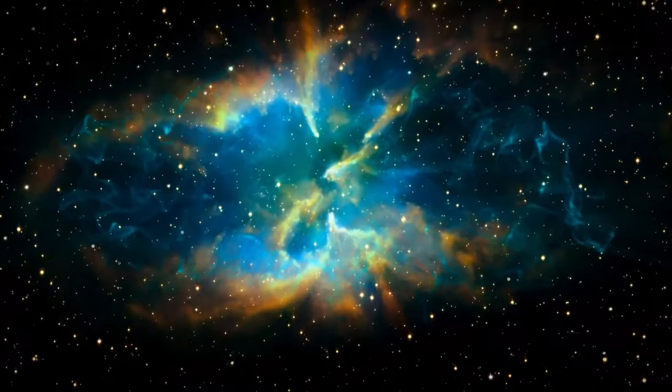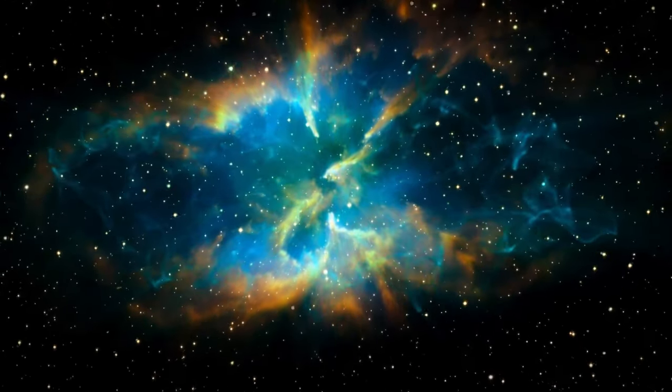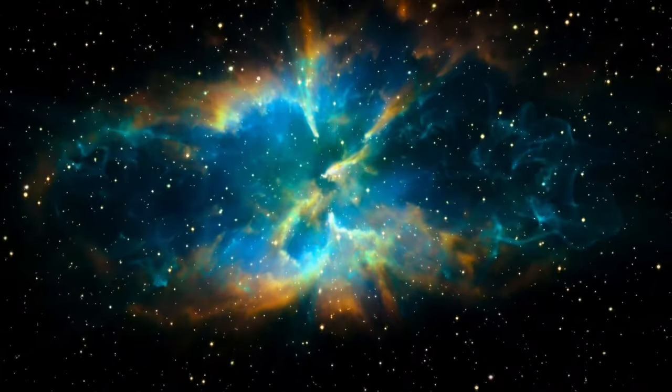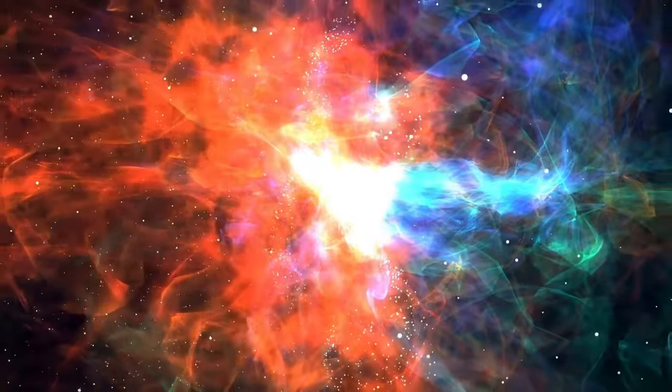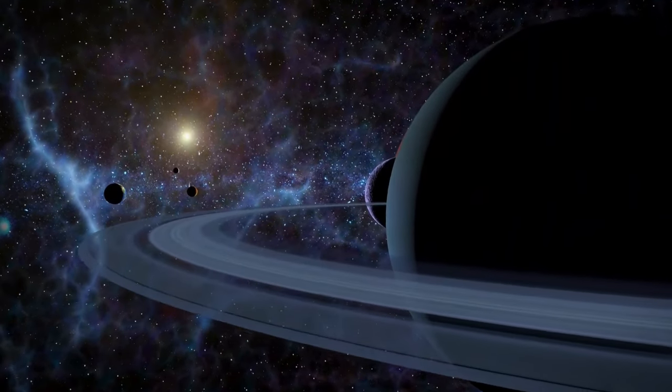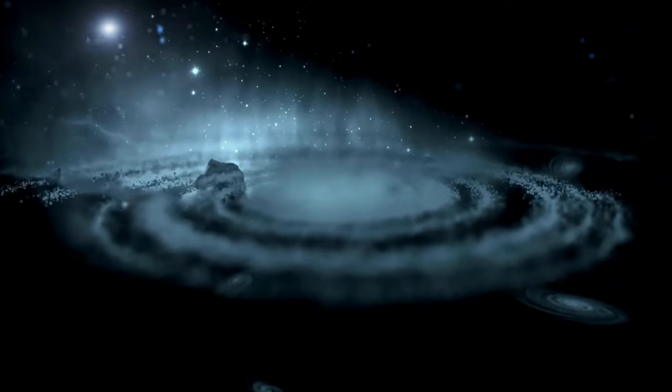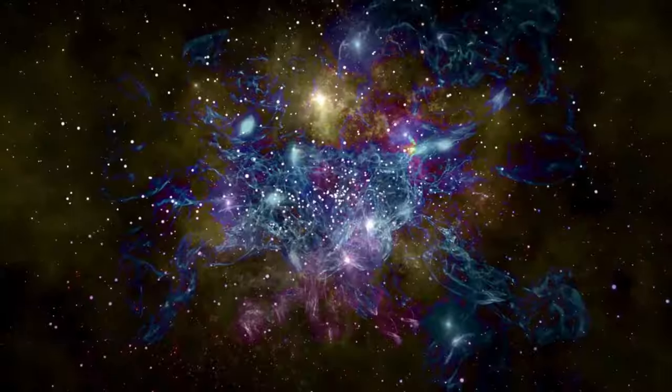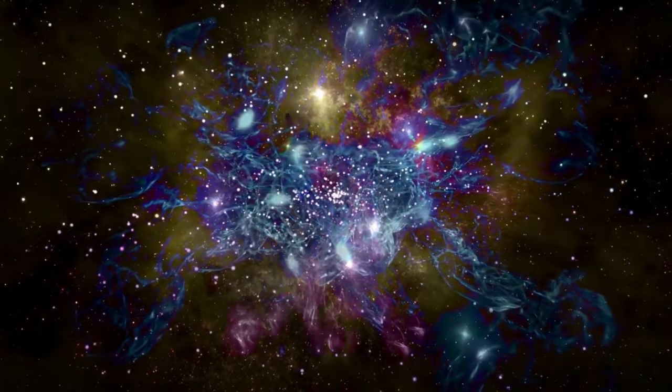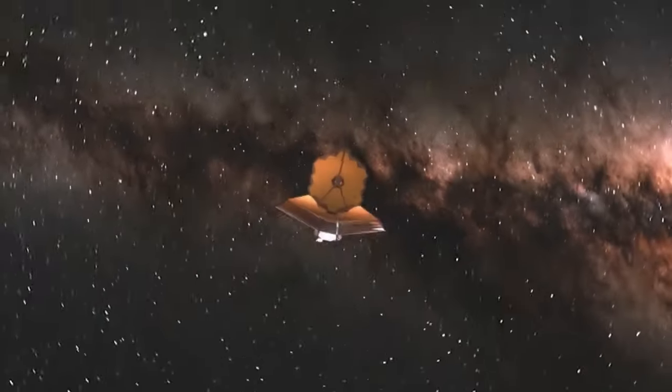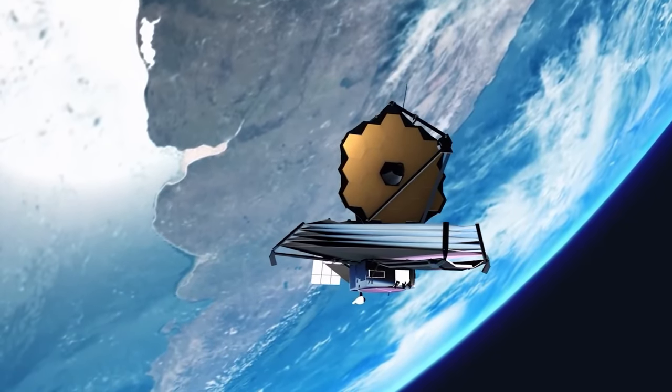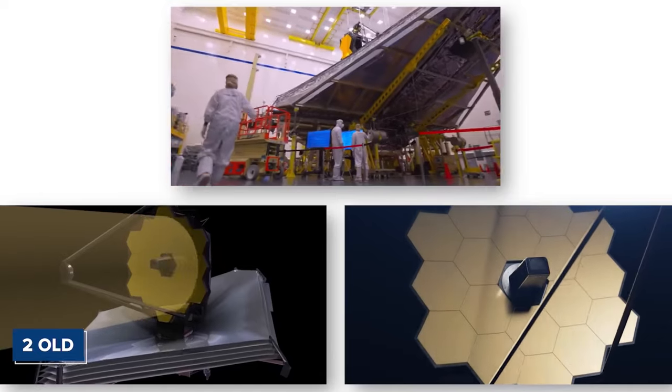At the heart of the James Webb Telescope lies its revolutionary instrumentation, meticulously designed to capture and analyze infrared radiation emanating from celestial objects. Unlike its predecessor, the Hubble Space Telescope, which primarily operates within the near-ultraviolet and visible spectra, the JWST extends its reach into the farthest reaches of the infrared spectrum, spanning wavelengths from 0.6 to 28.3 micrometers. This expanded observational range enables astronomers to peer into regions of the universe previously inaccessible, unveiling hidden wonders and unlocking the secrets of cosmic evolution.